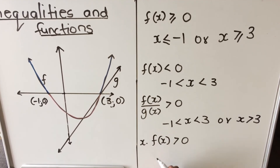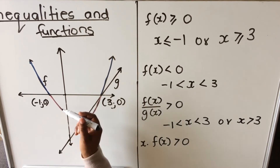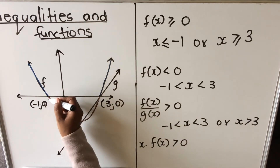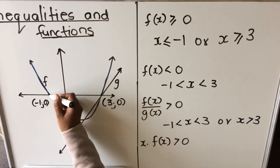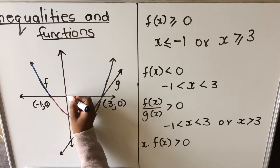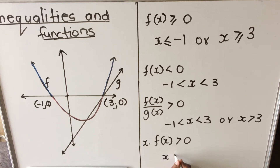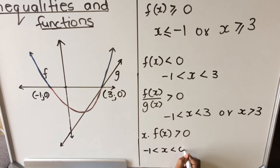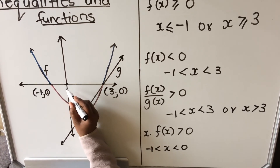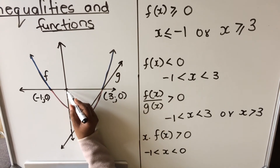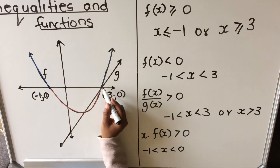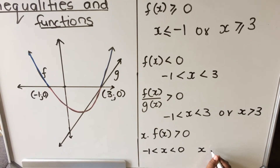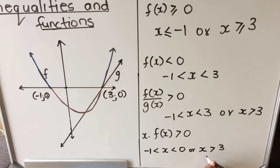From minus 1 to zero, x is negative and my function is also negative — both negative — so x times f(x) is positive there. My x is greater than minus 1 up to zero. From zero onwards, even though my hyperbola dips below, from x greater than 3 both my function is positive and my x-values are also positive, so the other answer is x greater than 3.